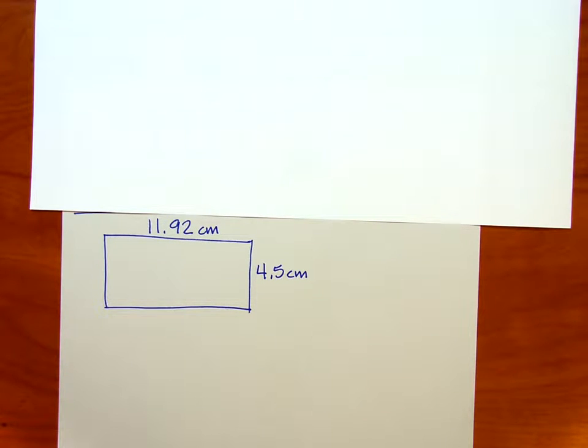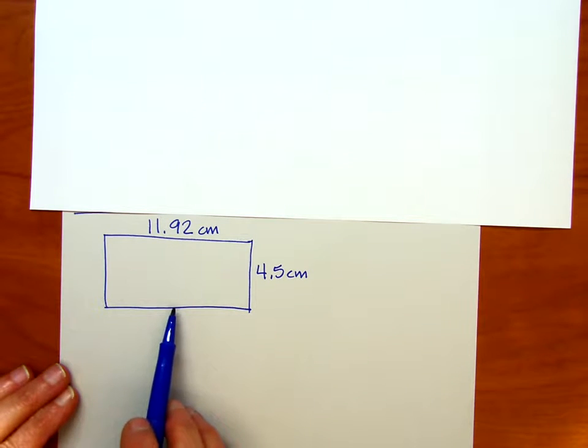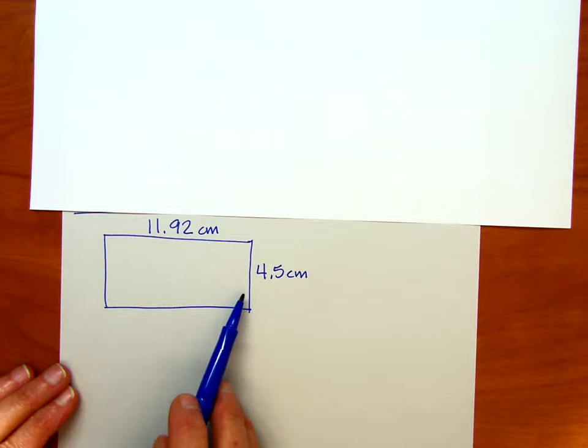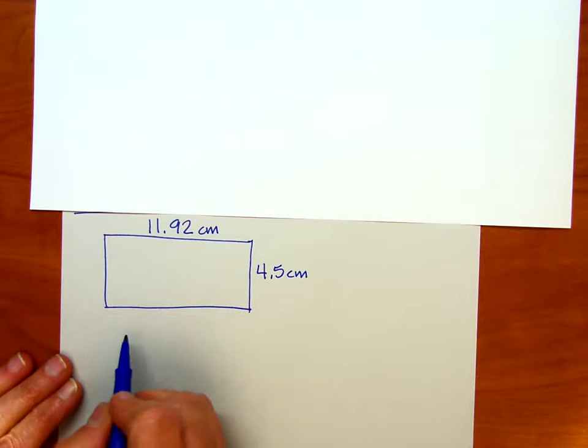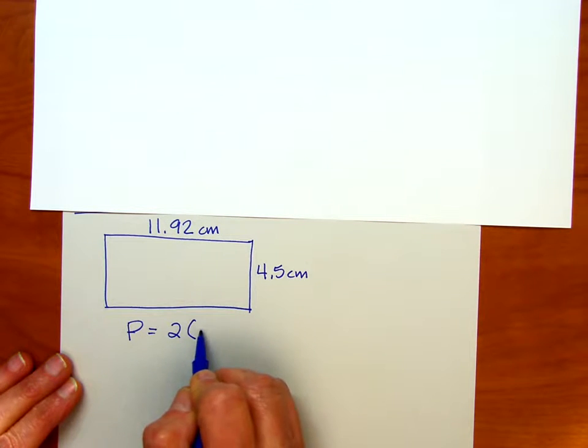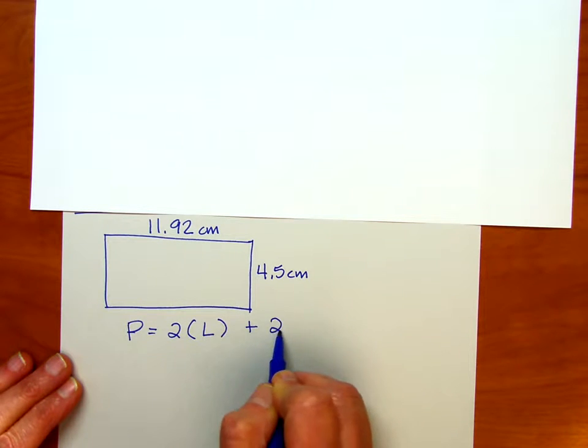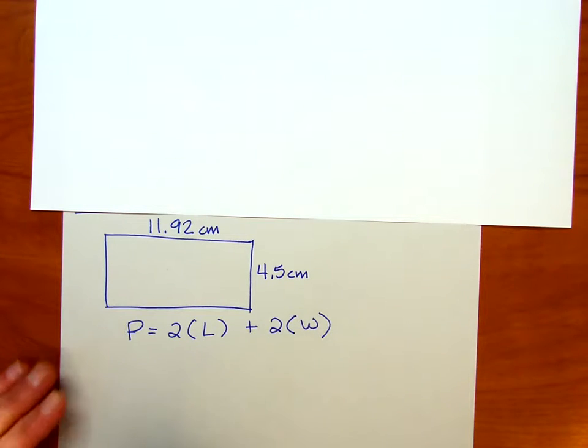One way is to just add up all the sides. Another way, knowing that it is a rectangle, that the top and bottom will be the same and the left and right will be the same, another way to write that out is to say that the perimeter equals two times your length plus two times your width.